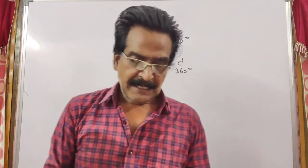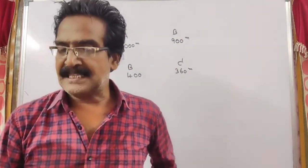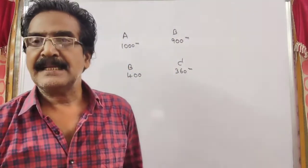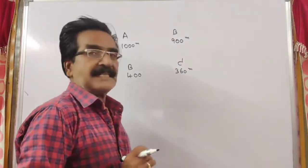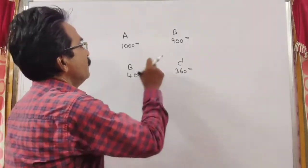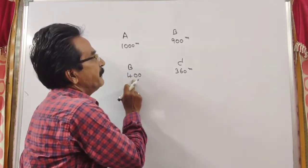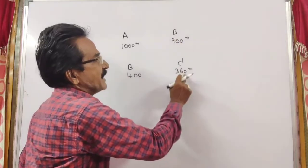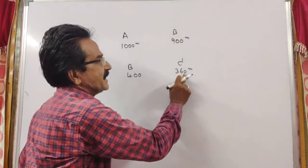Now the question is: in a race of 500 meters, by how much will A beat C? So when B runs 400 meters, C runs 360 meters.